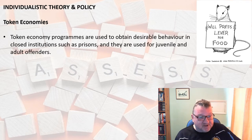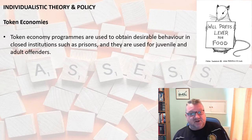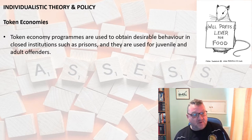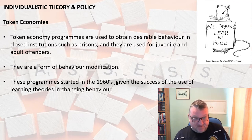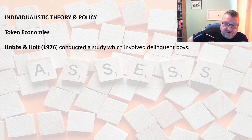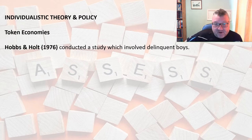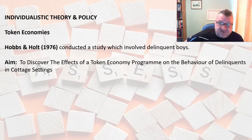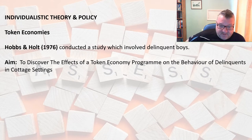A token economy programme is basically one designed to obtain desirable behaviour in closed institutions such as prisons and young offenders' units. They are a form of behaviour modification and started in the 1960s, given the success of learning theories in changing behaviour. So they're linked to individualistic theory. The big study was done by Hobbs and Holt in America, in Alabama, with delinquent boys. They wanted to discover the effects of a token economy programme on criminal behaviour within the Young Offenders Institute.